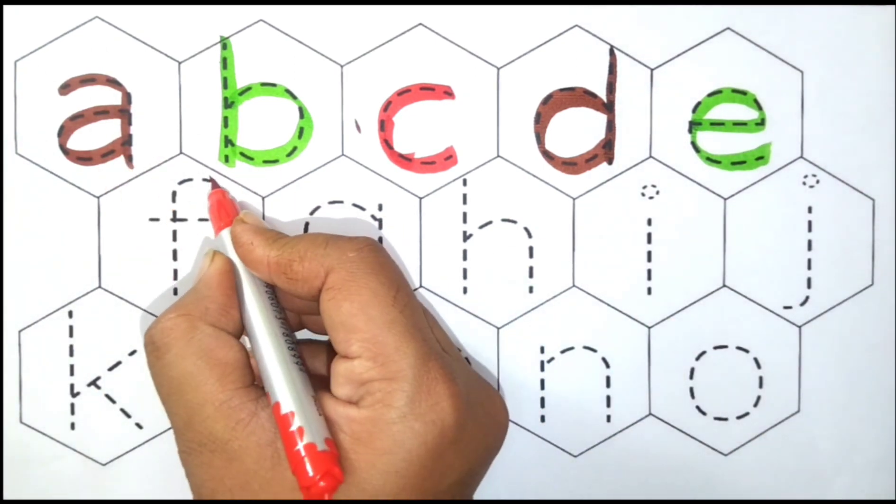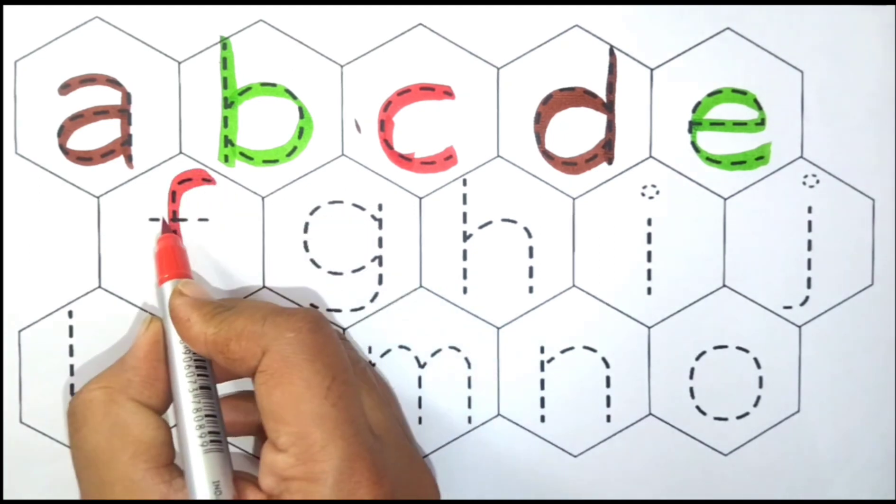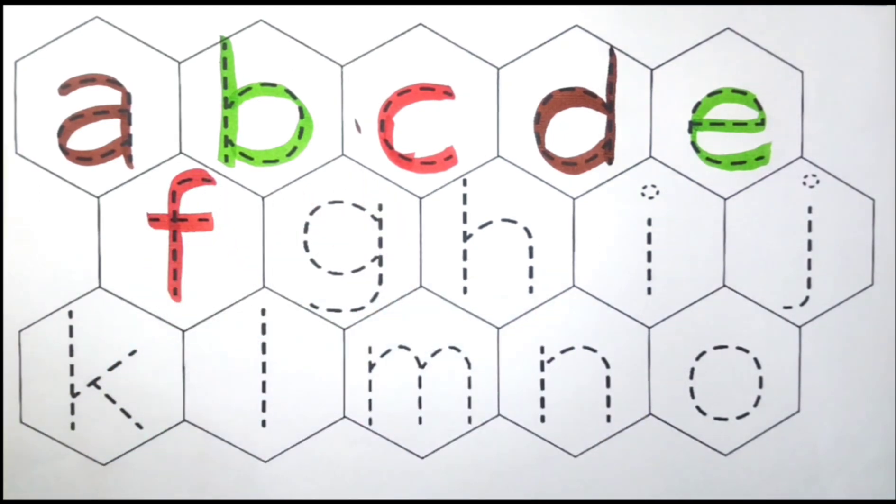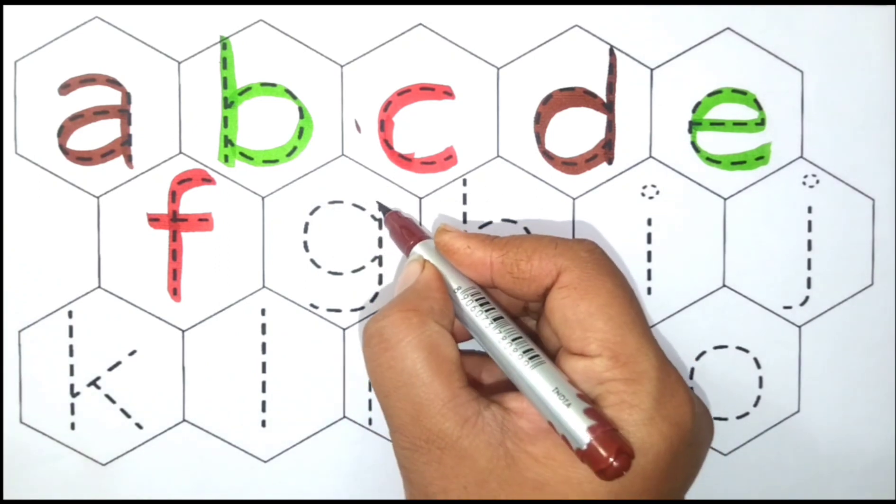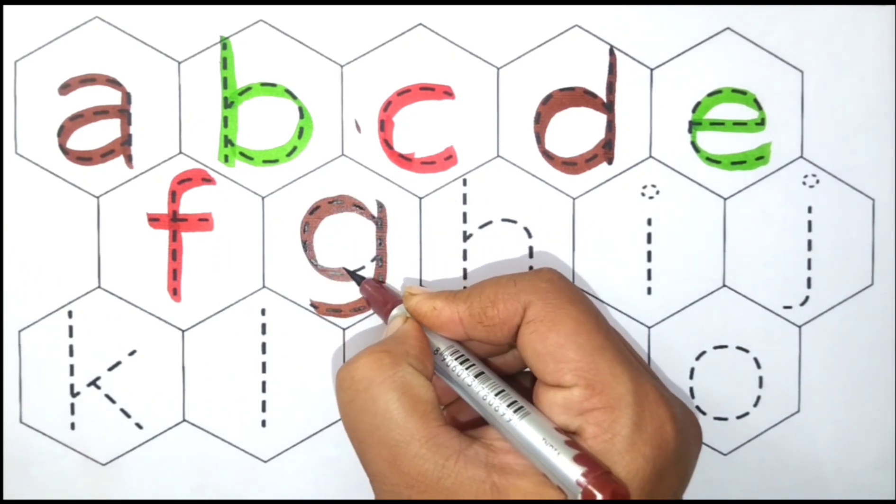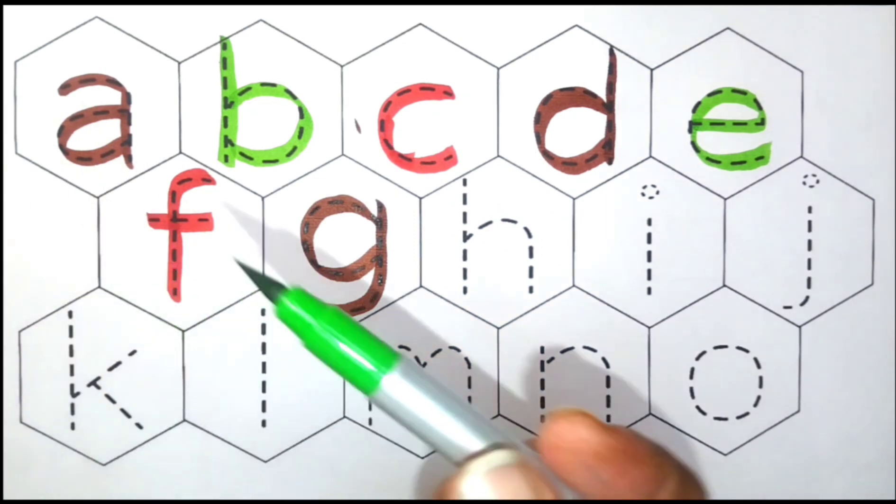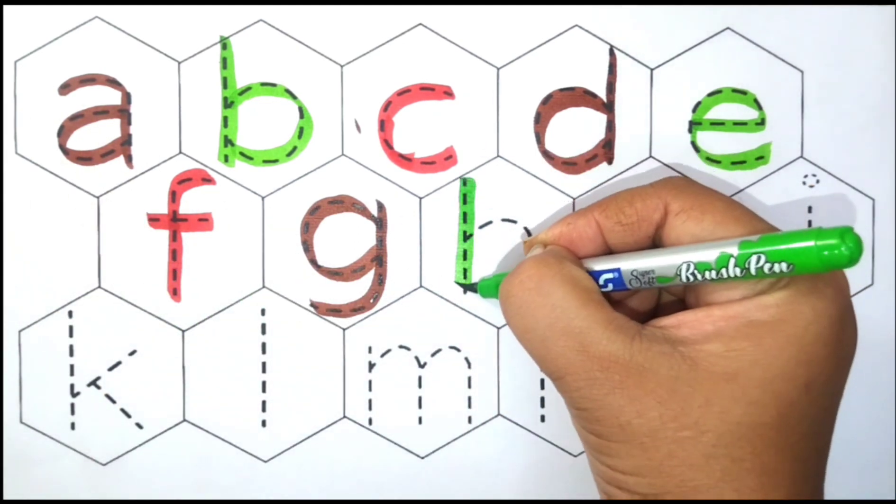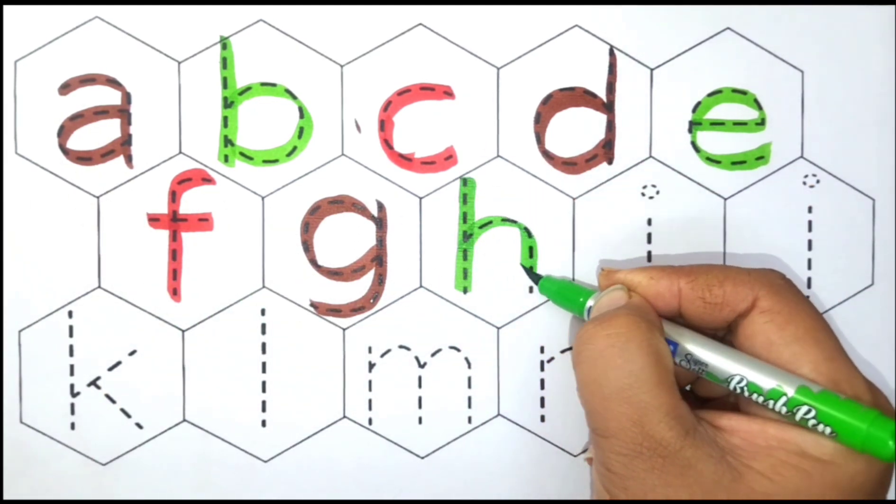Red color, F, F4, Fan. Brown color, G, G4, Gun. Green color, H, H4, Horse.